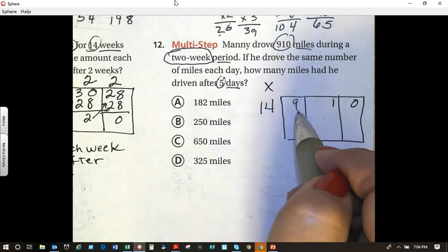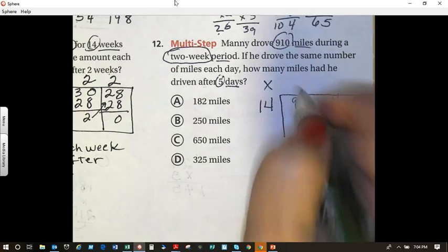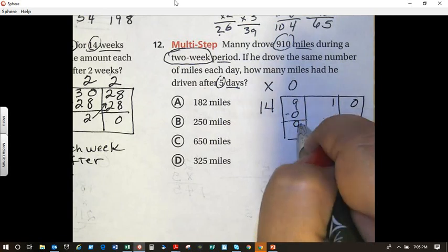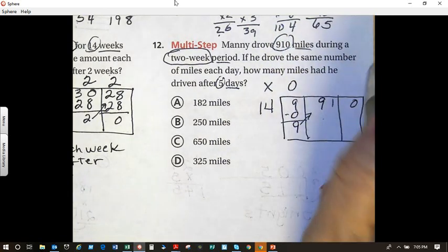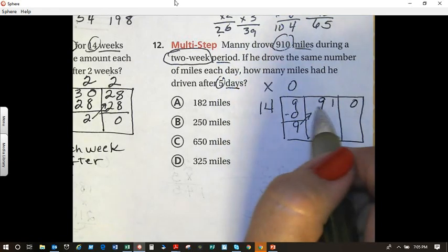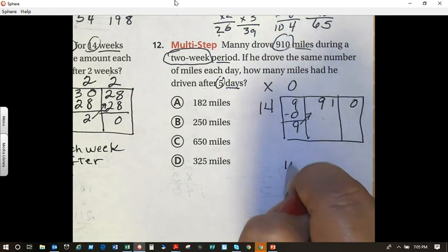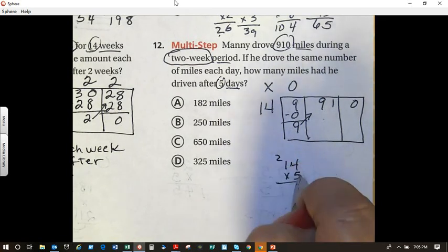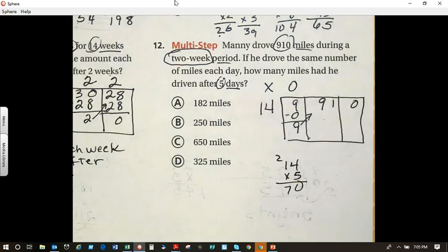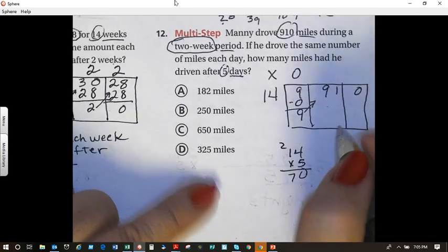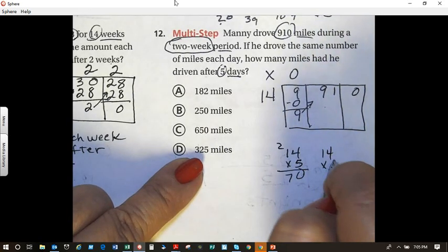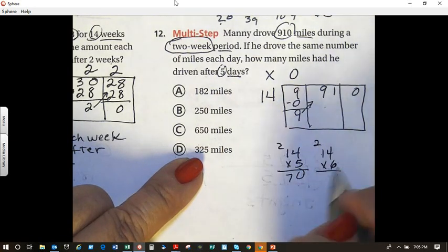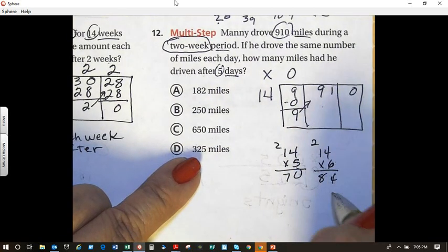14 cannot go into 9 because it has to be equal to or greater than my divisor. So it's 0. 0 times 14 equals 0. So track that out. It leaves me with 9. Regroup my 9. So now how many groups of 14 can go into 91? So I'm going to start with my 5s. 14 times 5. 5 times 4 is 20. 5 times 1 is 5. Plus 2 is 70. Can I keep going? So 14 times 6. 6 times 4 is 24. 6 times 1 equals 6. Plus 2 is 8. I think that's as close as we can get without going over.